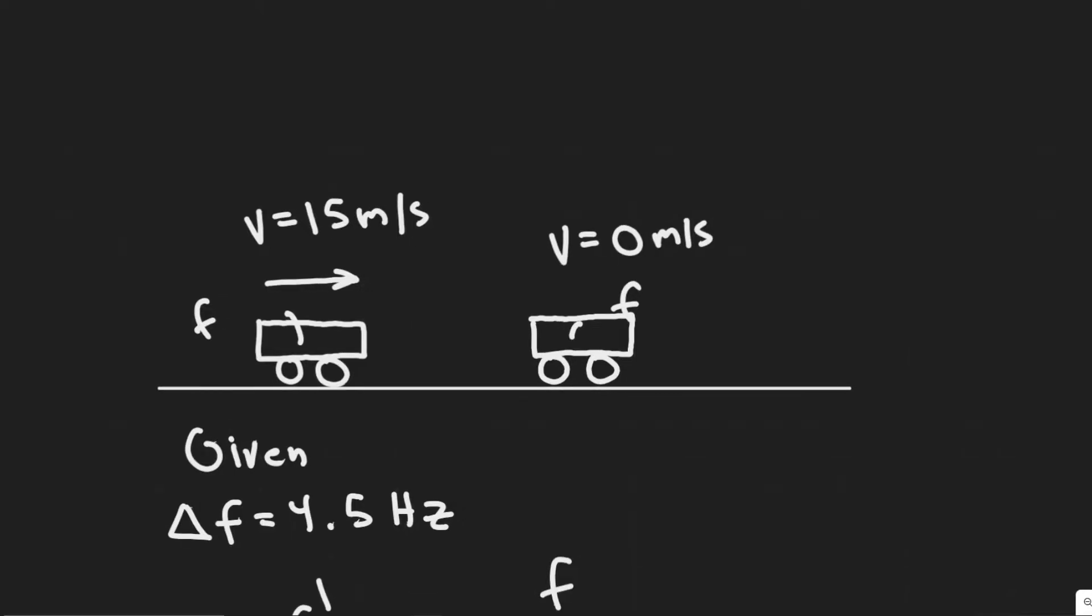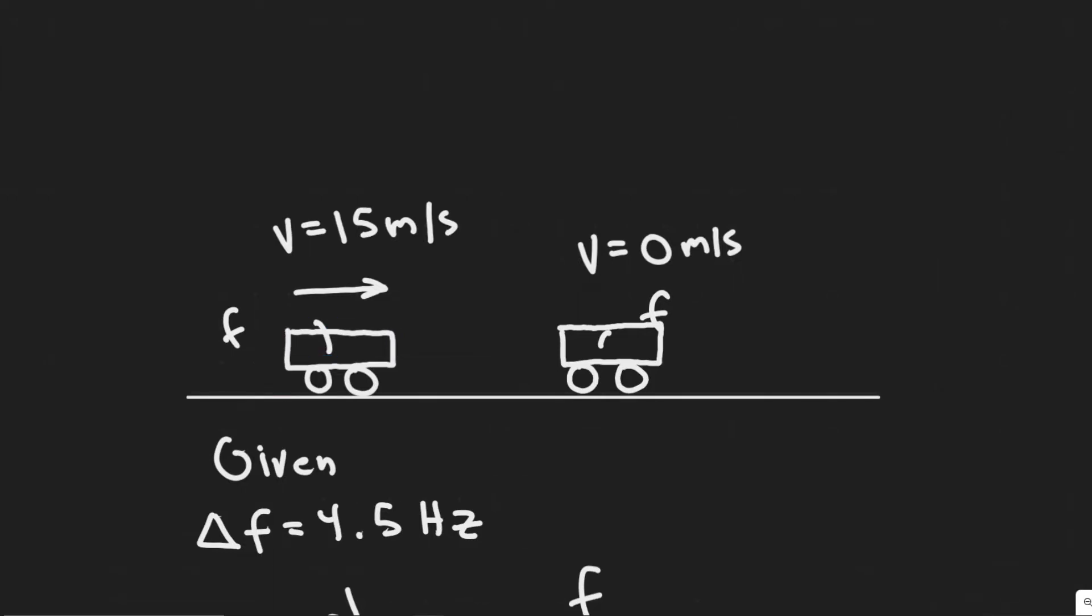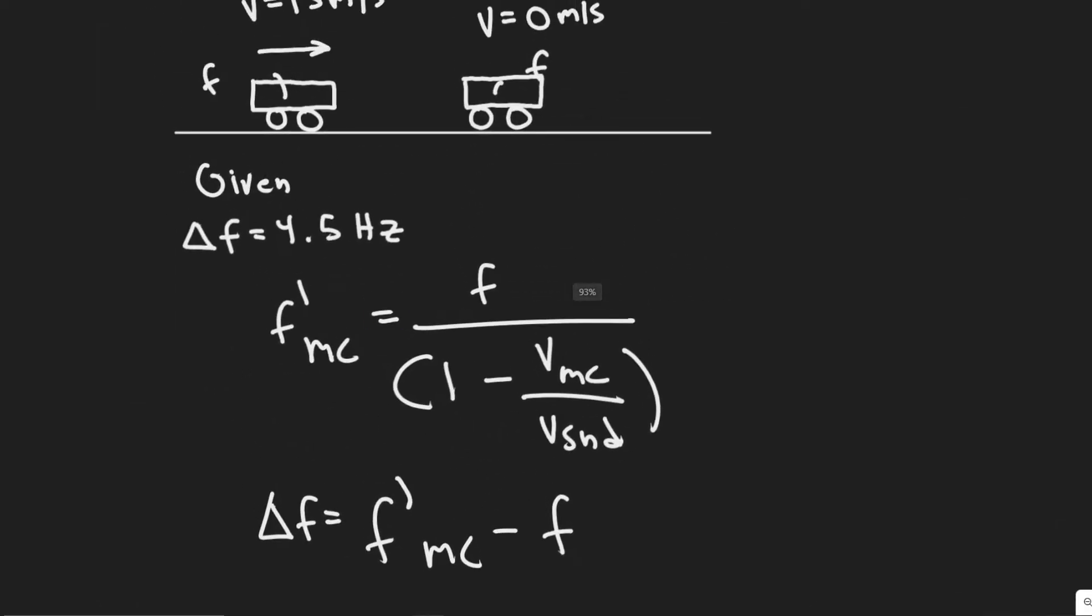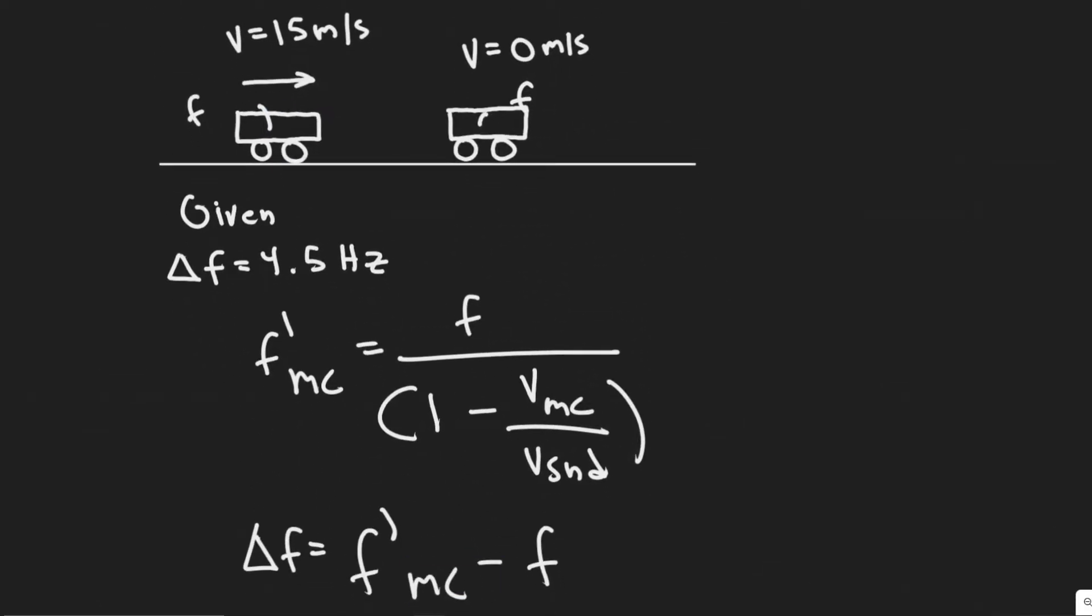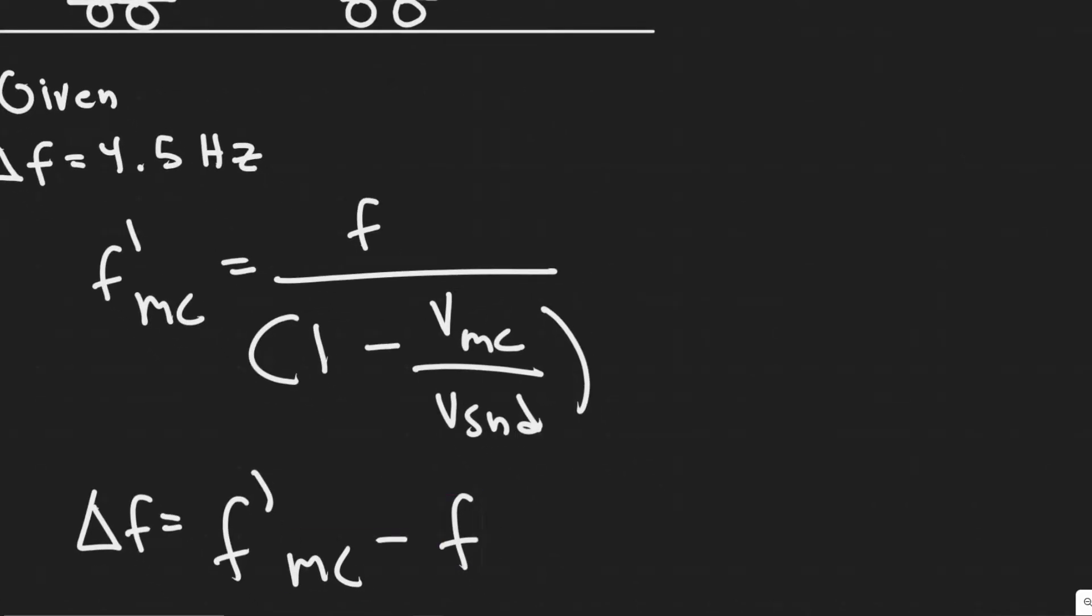So that means this value is the difference between the frequency it receives from this car or hears minus the frequency it actually emits. So it obviously has some frequency value and then it's different as a result of the Doppler effect. And so we're trying to find the difference between those two values.